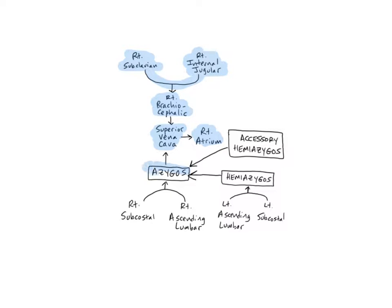The azygous vein is the major vein of the azygous system. It's an unpaired vein located anterior to the vertebral column, slightly to the right of the midline, beginning near the diaphragm. Its name, azygous, means unpaired or without a twin. There is only one azygous vein, so we don't refer to it as being either right or left.